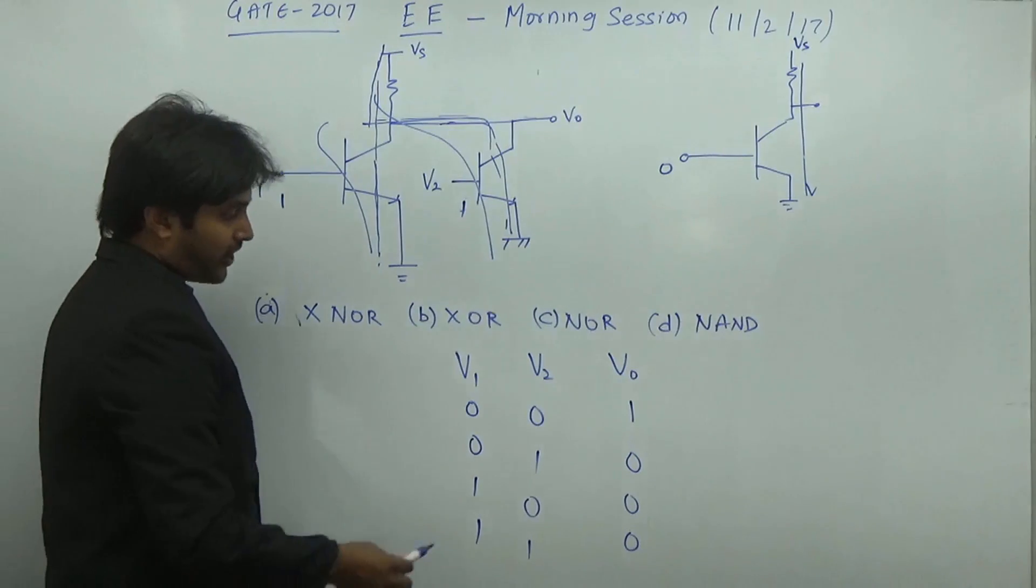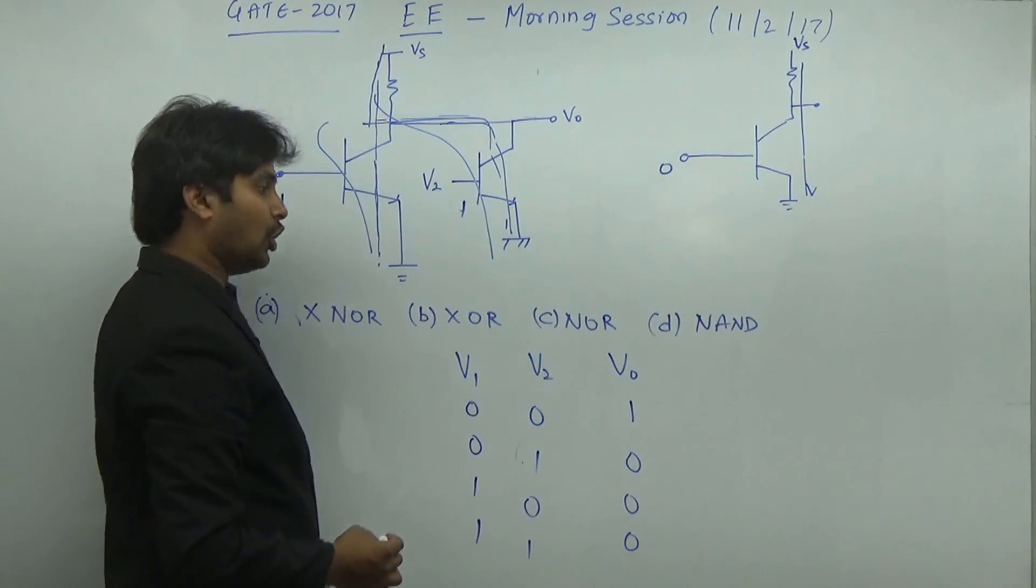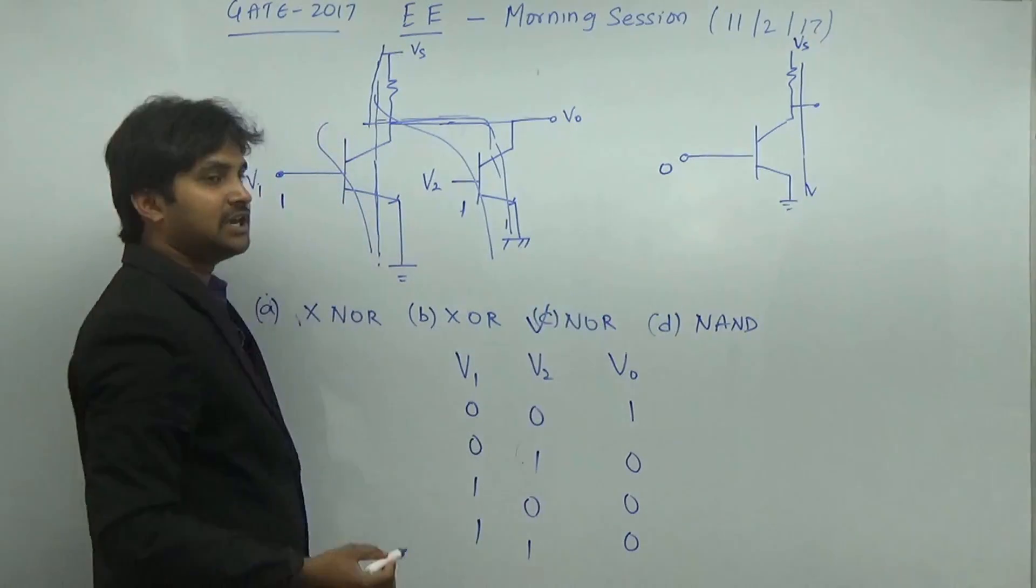If you observe here, if any 1 is present, the output is equal to 0. This is an indication of a NOR gate. So the answer is option C, NOR gate.